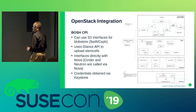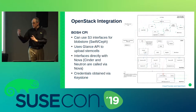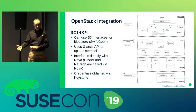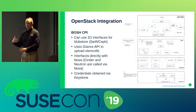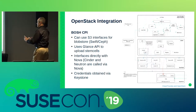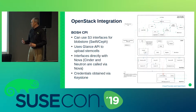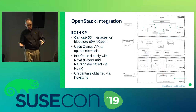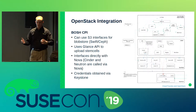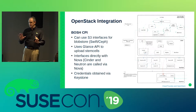The BOSH OpenStack CPI can work with S3 interfaces — so Swift or Ceph, in our case SUSE Enterprise Storage. It uses Glance APIs to upload virtual machine images that BOSH and Diego then deploy. It interfaces directly with OpenStack Nova for compute, Neutron for networking, Cinder for block storage via Nova, and Keystone for credentials. Hopefully everybody has a basic understanding of OpenStack because I'm going to get a little deeper into it.